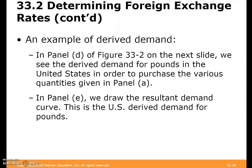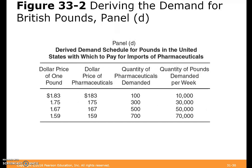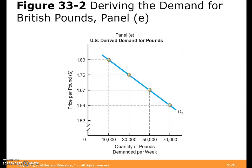Here's the example of derived demand. In panel D on figure 33.2, we see the derived demand for pounds in the United States in order to purchase the various quantities we first saw. In panel E, we draw the resultant demand curve — the U.S. derived demand for British pounds.